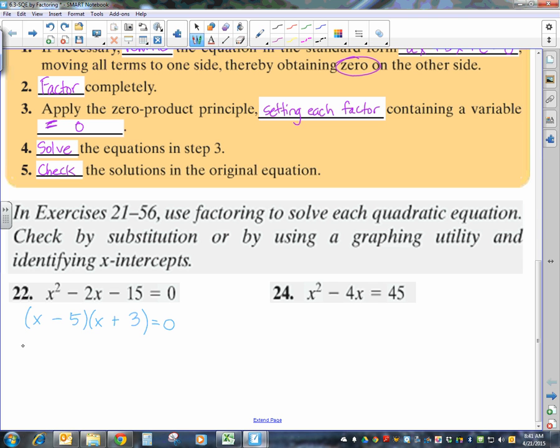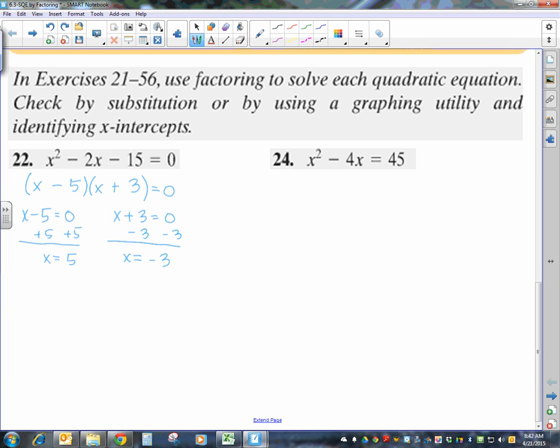So that's the factoring step. The third step is to set each of these factors equal to 0. And then you solve each equation. So I'm going to solve this by adding 5 to both sides. So x equals 5. And then, of course, I would subtract 3 here. And that would tell me that x equals negative 3. So the answer to my problem, you can write it like this: x equals 5 or negative 3. Or you can write x equals 5, negative 3. That comma is a way of using or.